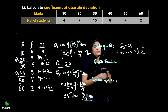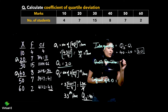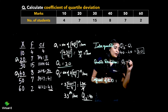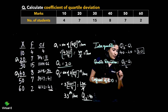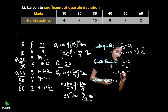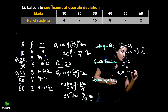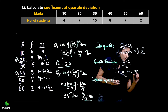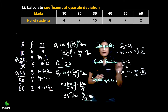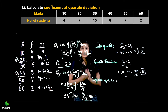Next, we find the quartile deviation. The formula for quartile deviation is Q3 minus Q1 divided by 2. So this will be 40 minus 20 divided by 2, which is 20 by 2. The final answer for quartile deviation is 10.